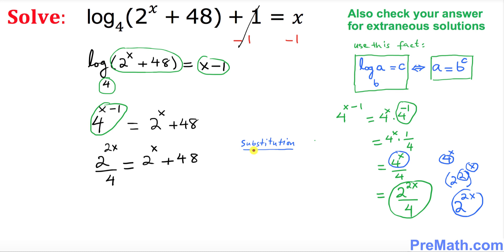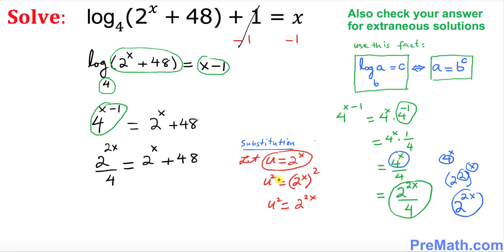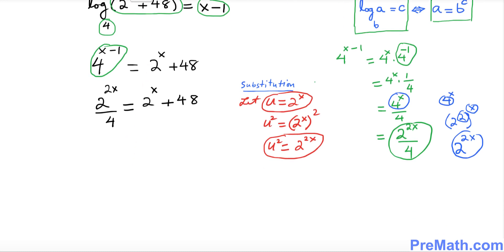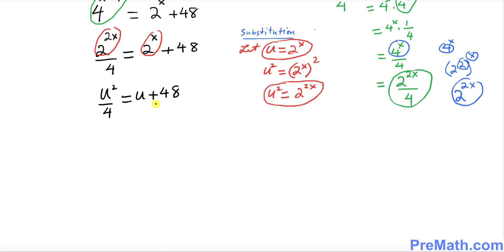To simplify further, we use the substitution method. Let u equal 2^x. Then u² equals (2^x)² equals 2^(2x). So we replace 2^(2x) with u² and 2^x with u, giving us u² over 4 equals u plus 48.